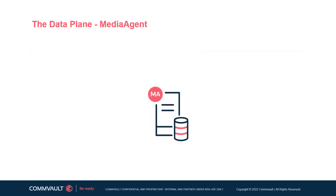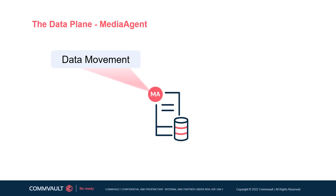The data plane comprises the media agent. On this layer of architecture, high-performance data movement and storage library management are performed by any number of media agents. The media agent acts as the gateway between data streams from servers being protected and the storage targets where backup data will reside. Media agents accept data from any server with the appropriate Commvault software packages installed and then transport that data to a broad range of storage targets including disk, tape, and cloud storage.